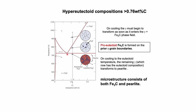Similarly, for a hypereutectoid composition starting at G, everywhere is only gamma phase. Going to point H in this phase diagram, this is the two-phase region of gamma plus cementite Fe3C. The Fe3C is also produced along grain boundaries to minimize free energy. When temperature decreases further, the gamma phase is finally transferred to pearlite structure, and all transformation will be completed.